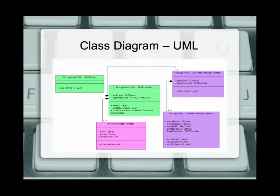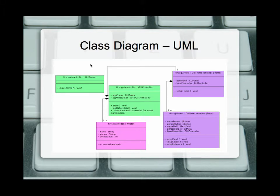Here we have our class diagram using the UML we've been looking at in class. In green we have all of our controller objects, specified by the package first and then by the name of the class. The controller package, denoted in green, has a runner as one of its main objects with a static void string args — aka PSVM — listed here. It doesn't have any arrows surrounding it because it doesn't have a has-a relationship. We also have in green the controller, which has a has-a relationship denoted by the diamond line with the frame and an array list of the whatsit object.